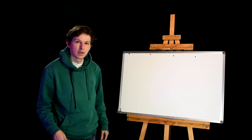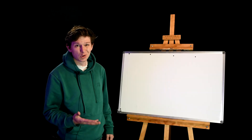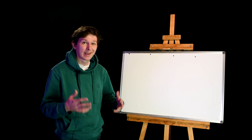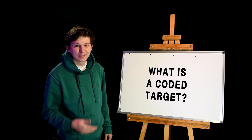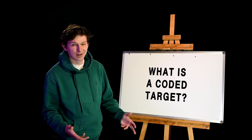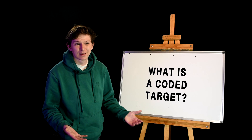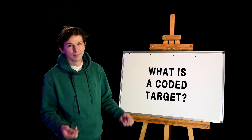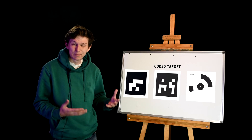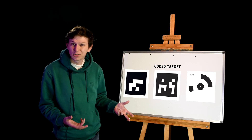What are coded targets and scale bars? To begin, we're going to need to understand the tool that we're going to be using to scale our photogrammetry alignment — and that is the coded target. This is going to be a very simplified explanation, but I hope it conveys at least the basics behind what it is and why we use them. A coded target is a black and white pattern; it's visually similar to a QR code.